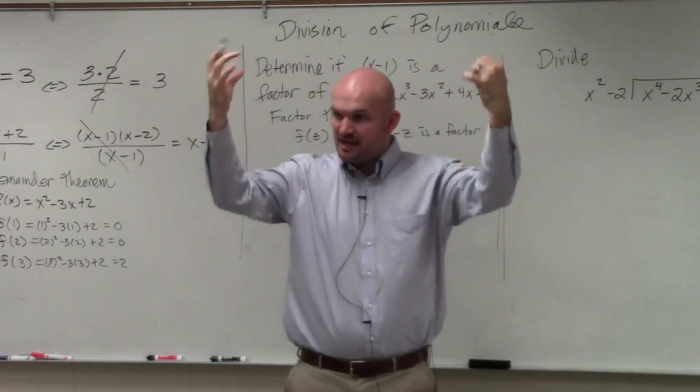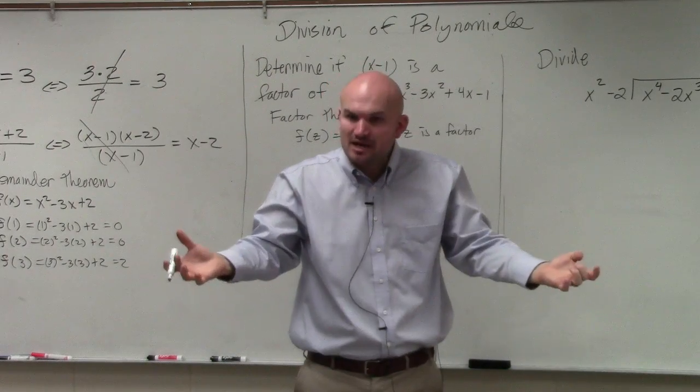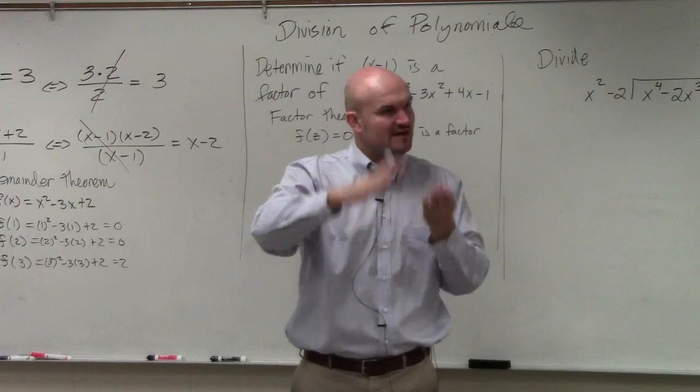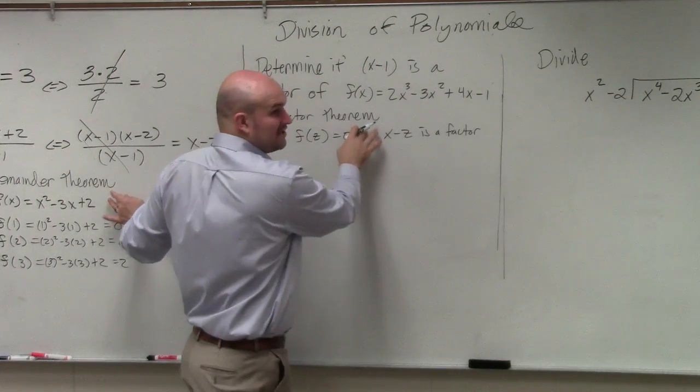In solving, we take a polynomial, we factor it out so we have factors, and then we apply the zero product property to find the zeros. So zeros and factors are very closely correlated. So the remainder theorem and the factor theorem are very closely correlated.